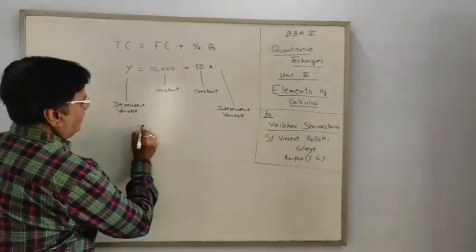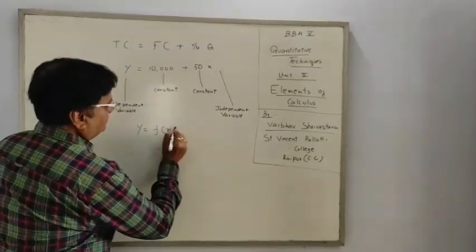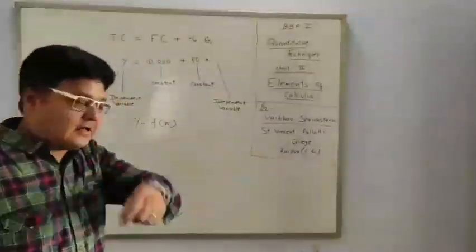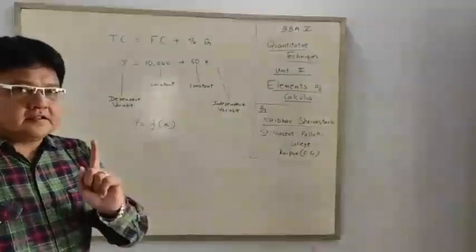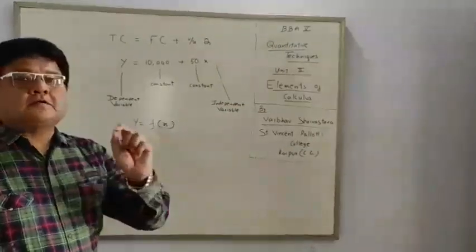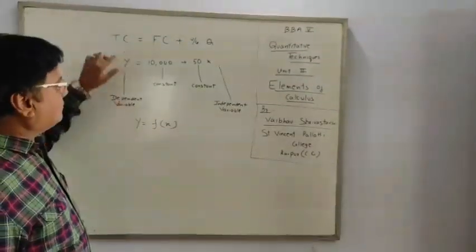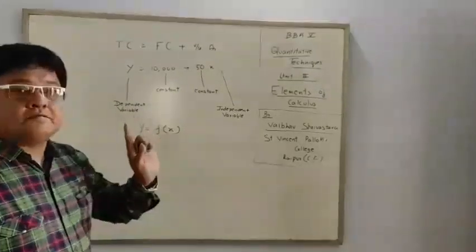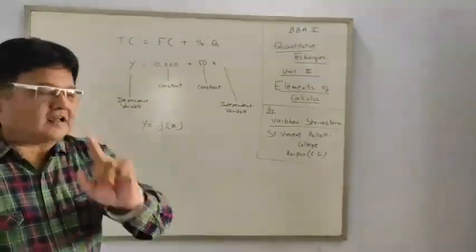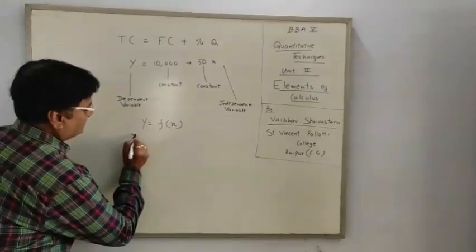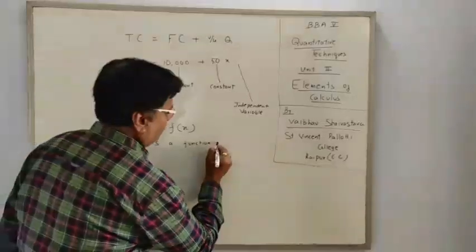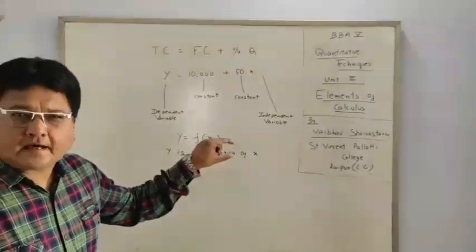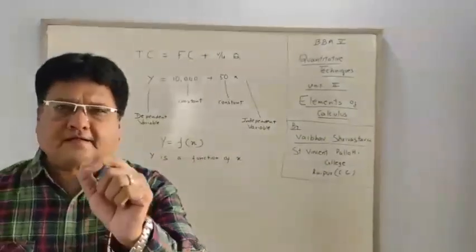That means Y is a function of X. You have studied that in Unit 1 — variables and functions — so many things related to functions you have already studied. Now in this unit, Elements of Calculus, we will be dealing with differentiation. Suppose I have to find the change in Y with respect to the slightest change in X, because Y is a function of X. We have to find the change in Y with respect to the slightest change in X.